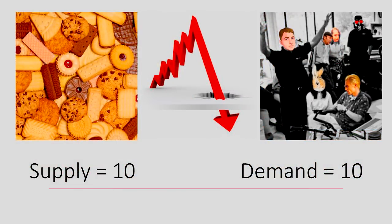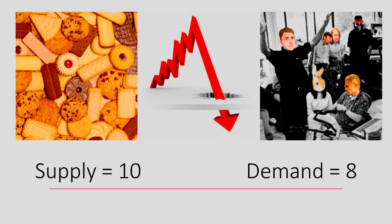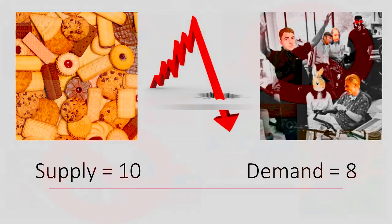Now let's pretend there's a craze for some other good — let's say cakes — and this lowers demand for biscuits. The price will drop, as now firms in the market must compete for fewer customers, and lower prices are always one way of doing this. Now in this new reality, the firms who were on the margin — in other words, the ones that were just about making a profit before — now simply cannot make enough to stay in business. They are effectively eliminated from competition.